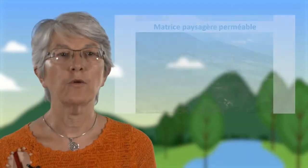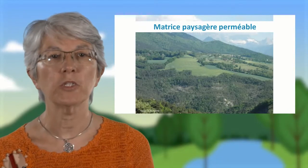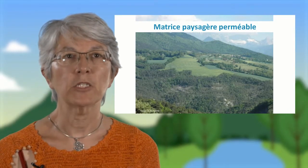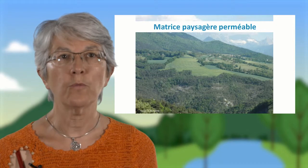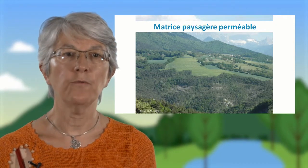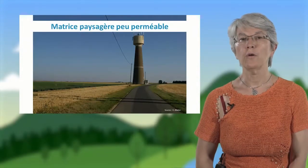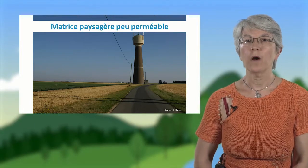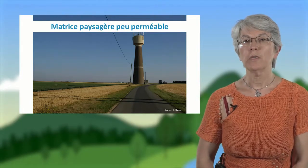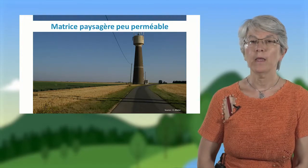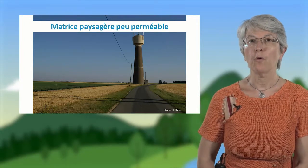Le troisième cas de corridors, c'est les corridors paysagers, qu'on appelle aussi des matrices paysagères perméables, où c'est tout l'ensemble du milieu qui permet les déplacements de la faune, comme c'est le cas sur cette vue des Alpes. À contrario, des matrices de milieux agricoles ouverts peuvent être défavorables à un grand nombre d'espèces : seules les espèces spécialistes des milieux ouverts vont y vivre, les autres ne pourront pas se déplacer.